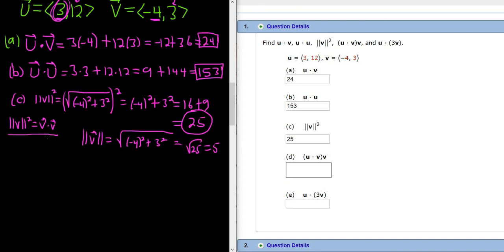Let's go ahead and do part d. In part d, we have u dot v and then parentheses and then v. So this is a number times a vector. We've already worked out u dot v. We know it's 24.